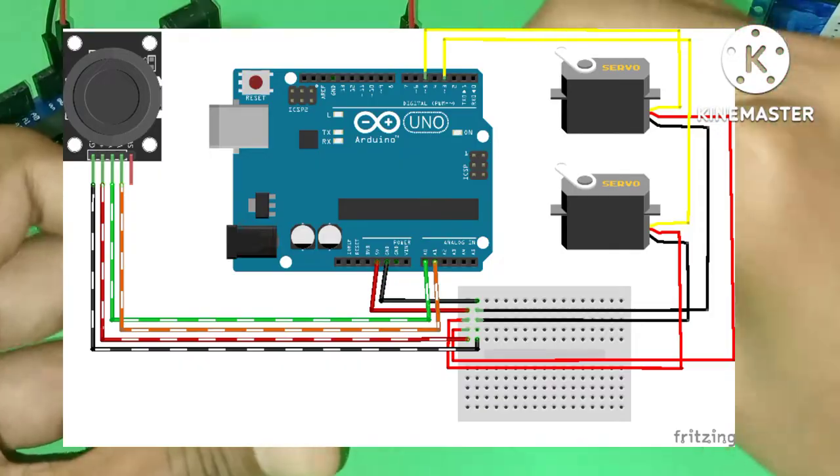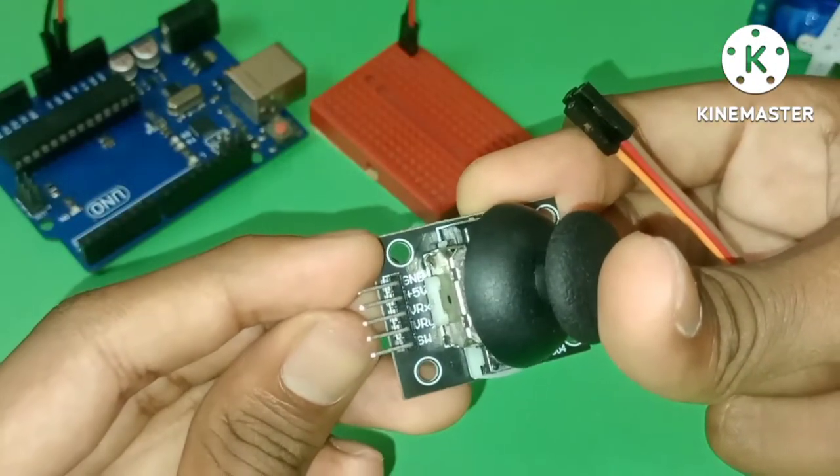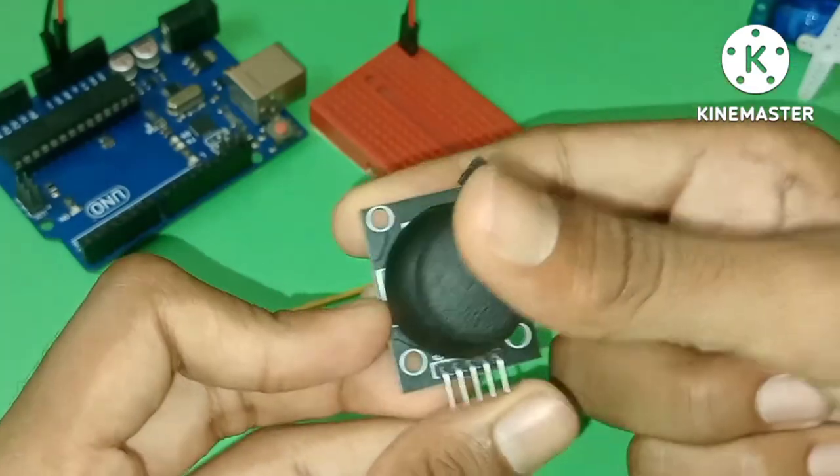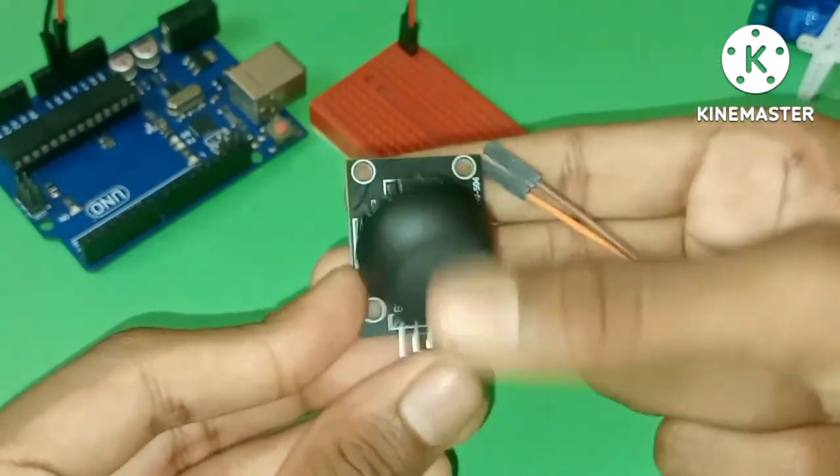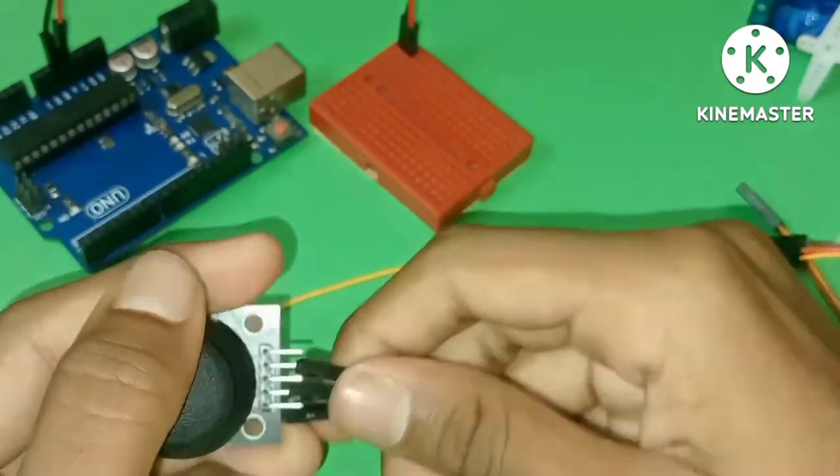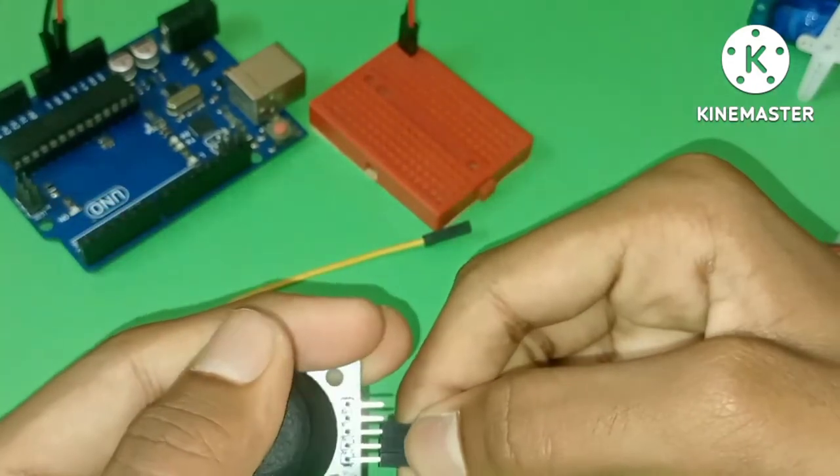The joystick has five pins: ground, five volts for power, VRX for the x-axis, VRY for the y-axis, and a switch pin. I'm going to use the switch in another project, so today we'll focus on ground, VRX, and VRY for normal control.